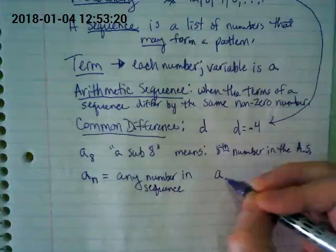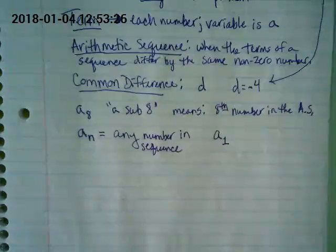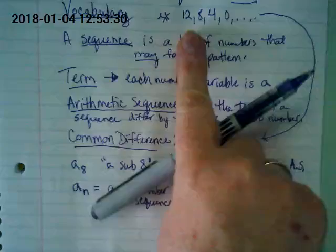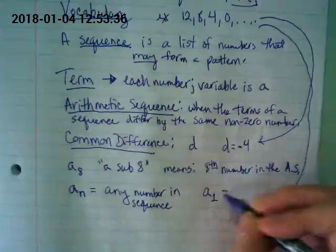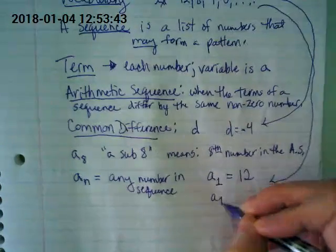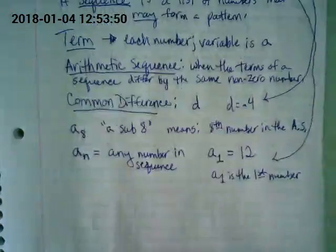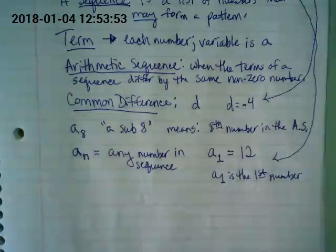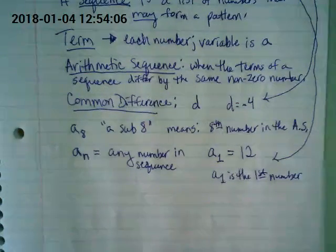So if I put the letter a with a little sub 1, it's going to be the first number in the sequence. Go back and look at my example up top — what is my first number? My a sub 1 is equal to 12, because a sub 1 is the first number. It's subscript — if you're ever in Word or Google Docs, you can do superscript and that's what an exponent looks like, and subscript goes below.